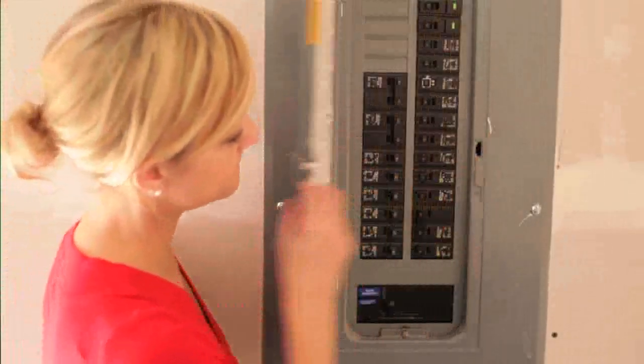The first step is to turn off the power to your heating and cooling system. Next, remove the old thermostat from the wall.